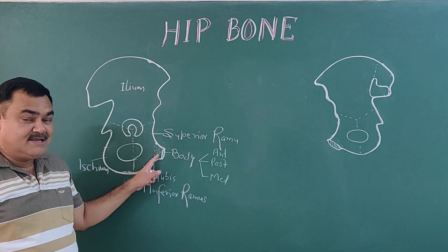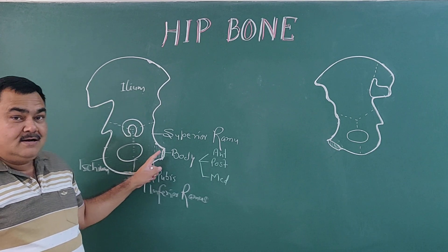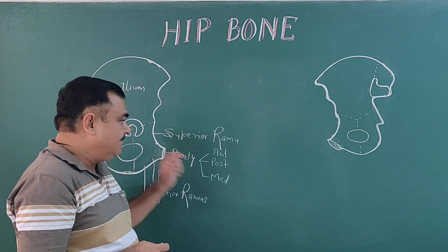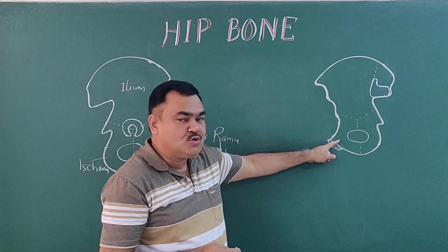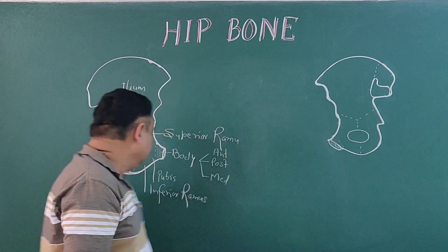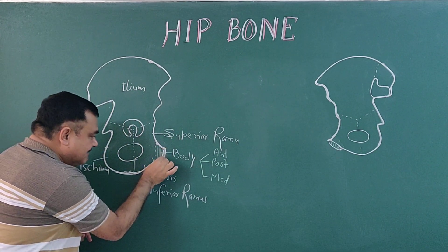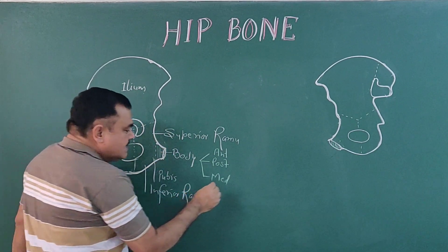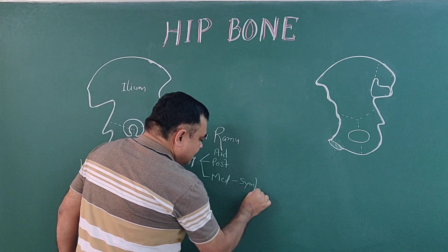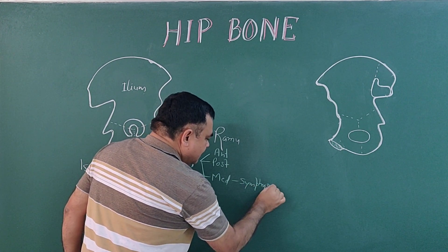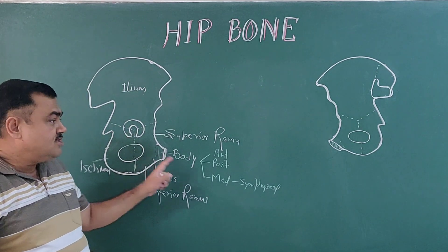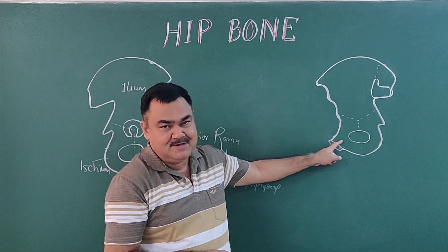Anteriorly, the anterior surface is directed forward, downward, and laterally. The posterior surface is directed upward and backward. The medial surface is also known as the symphysial surface. The posterior surface is also known as the pelvic surface.